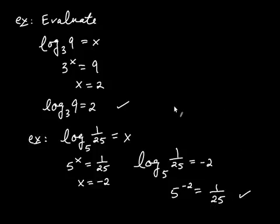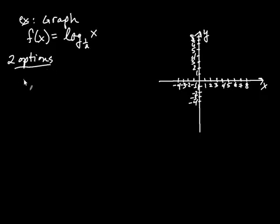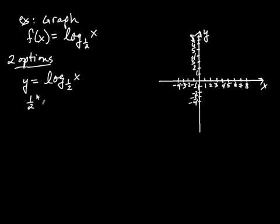Now that we understand how to evaluate logs, let's graph a logarithmic function. Let's graph f(x) = log base 1/2 of x. There are two options for graphing this. Option 1: convert the logarithmic equation to exponential form. Replace f(x) with y, so y = log base 1/2 of x, and rewrite as (1/2)^y = x. Now we use this equation to create a table of values.